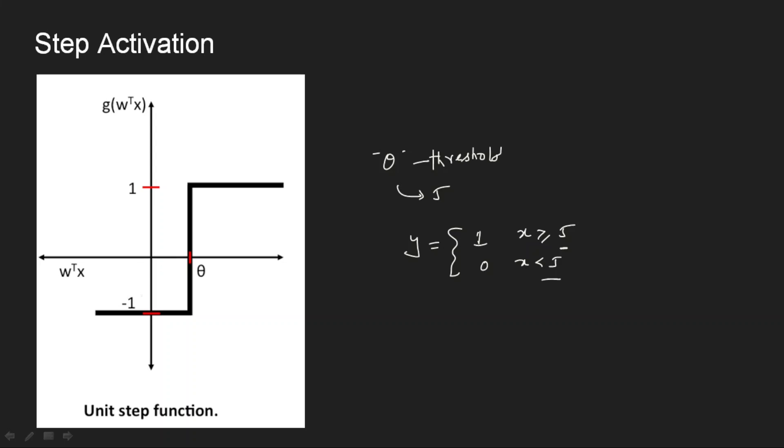If you see the step function, it is basically either 0 or 1, both are constant values. We have seen in the previous video the most important property any activation function should have is it should be differentiable. So for step function does the derivative exist? Yes, the derivative is there but it is 0. It is not like it is not differentiable, it is differentiable but the value is 0.